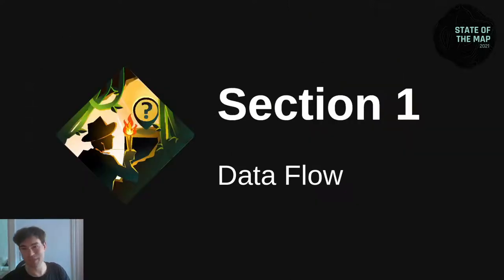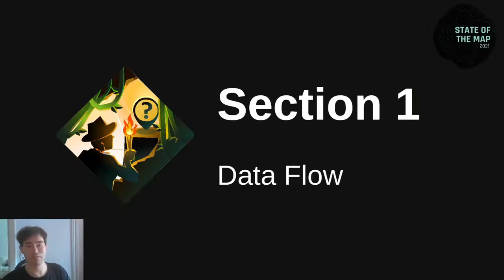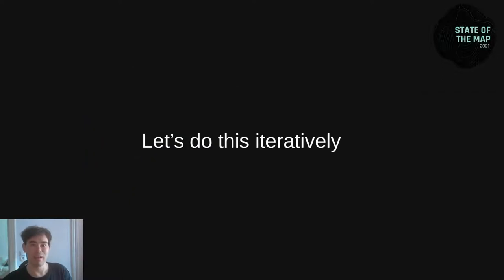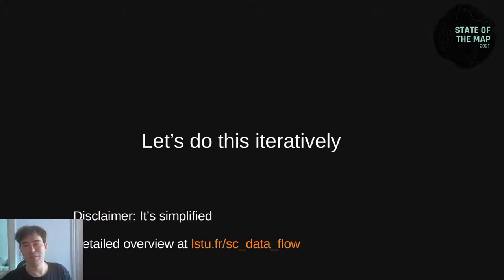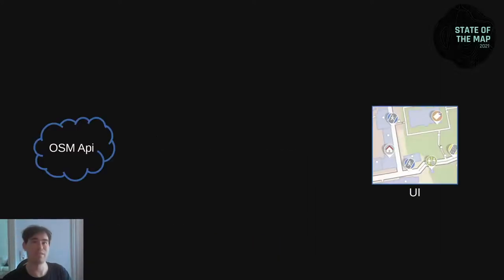It has three sections. In the first section, I will talk about the data flow — the rough architecture where the edits are sorted in. So that it is easier to follow, let's do this iteratively. And a disclaimer: it's simplified. Look at the displayed URL to see a more detailed overview with the actual class names, etc.